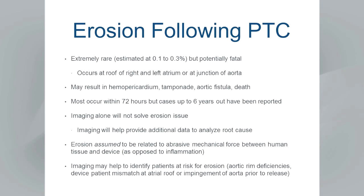Erosion can occur following percutaneous transcatheter closure. This is an extremely rare but potentially fatal complication, with a risk estimated at 0.1 to 0.3%. When it occurs, it typically happens at the roof of the right and left atrium or at the junction of the aorta, resulting in hemopericardium, tamponade, fistula, and potentially death. Most cases are reported within the first 72 hours, but case reports exist out to six years. High-quality imaging will provide additional data to help analyze the root cause and identify patients who may be at risk.